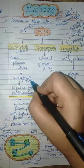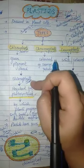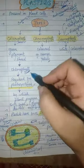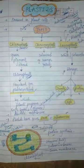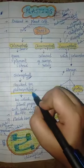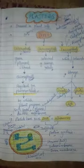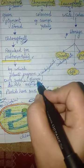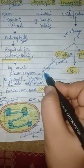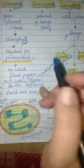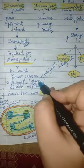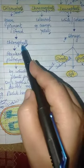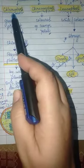Chlorophyll is the green pigment present in the majority of plants, and it is stored in the chloroplast. Chlorophyll is required for the process of photosynthesis — the process in which green plants prepare their own food in the form of glucose, a carbohydrate, in the presence of sunlight. This food-making process is all because of chlorophyll.